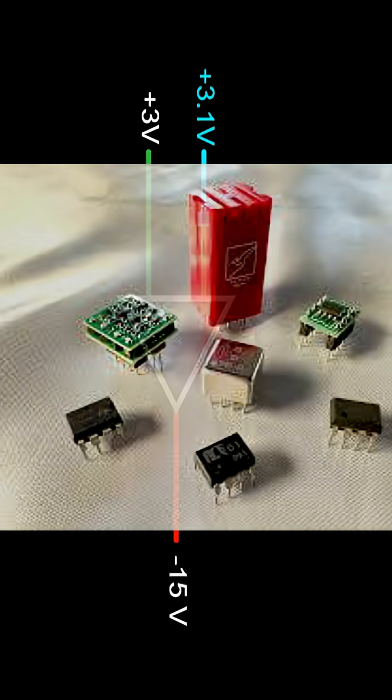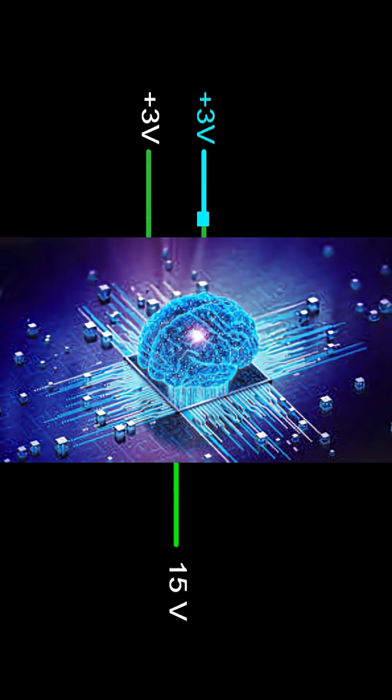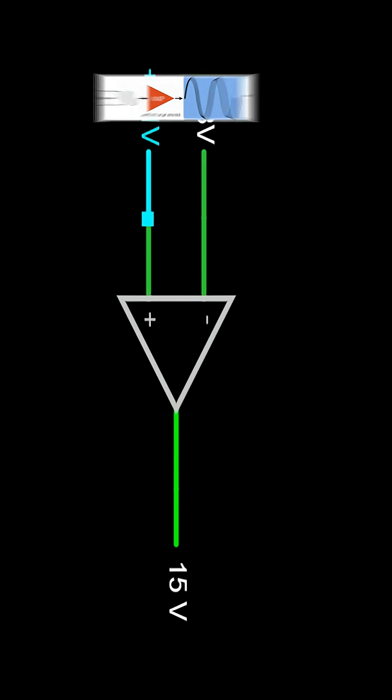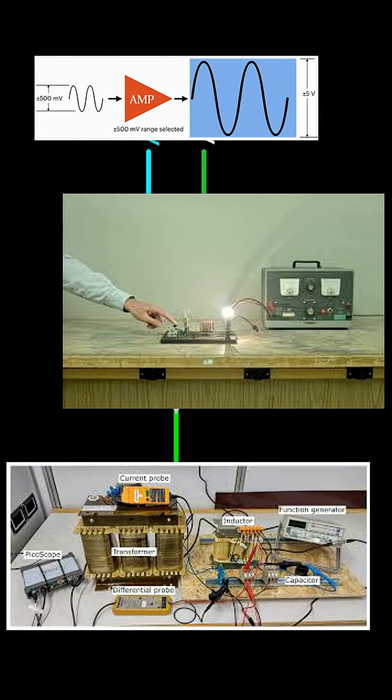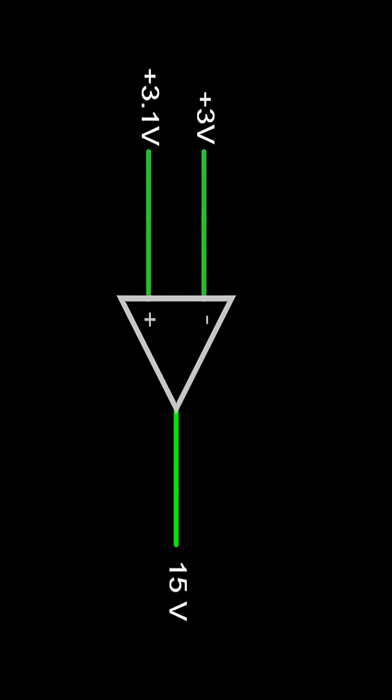In short, an op-amp is like the brain of analog electronics. It helps us amplify, compare, and control signals with great accuracy.